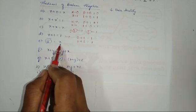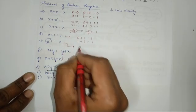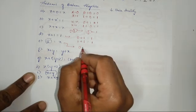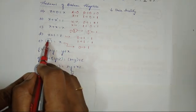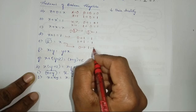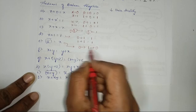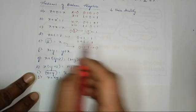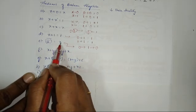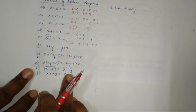The double complement of a variable is the variable itself. Taking x equal to 0: the first complement gives 1, and taking the complement of 1 gives back 0, which is the same as x. So the result after complementing twice equals x, meaning x double-bar equals x.